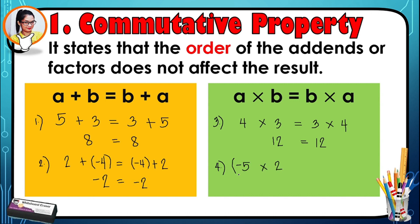Another example: negative five times two is equivalent to two times negative five. From what we have studied about multiplication of integers, if they have different signs the answer will be negative, so we get negative ten. Two times negative five also gives negative ten. This is what commutative property is all about.